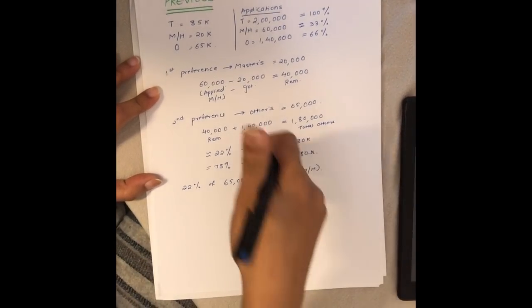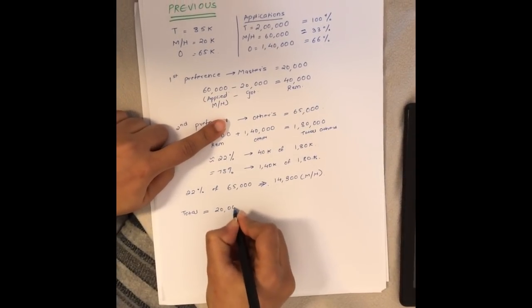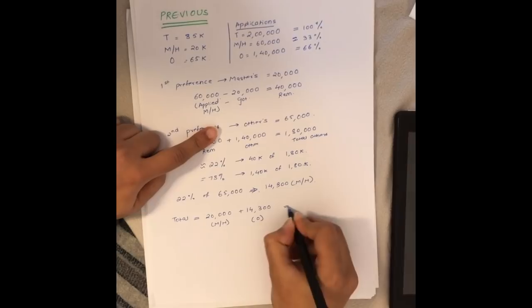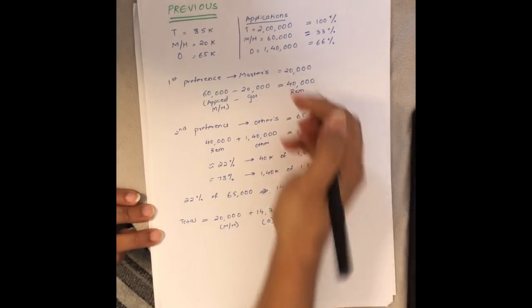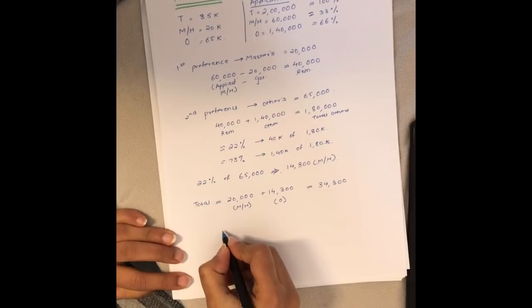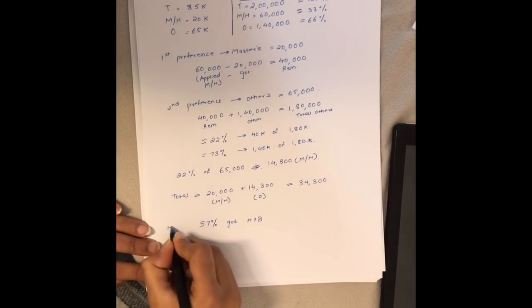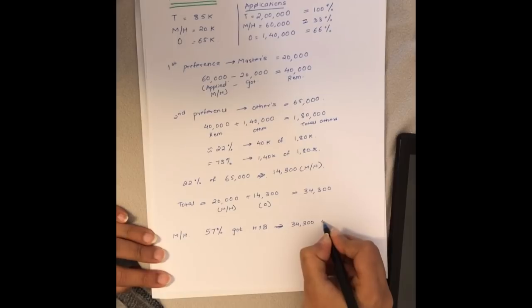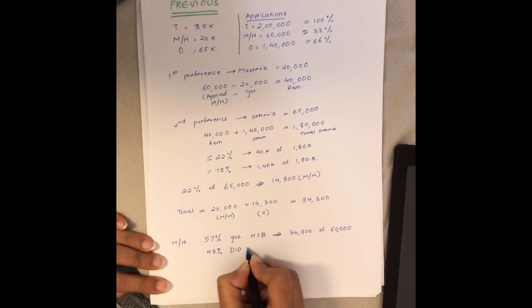If we calculate, you take 22 percent of 65,000, which equals 14,300. So totally, in the other preferences, 14,300 were masters or higher students. If you total up, you have 20,000 who already got into the masters category plus 14,300 who got into the others criteria, totaling 34,300 students who got H1B visa from the 60,000 who applied.